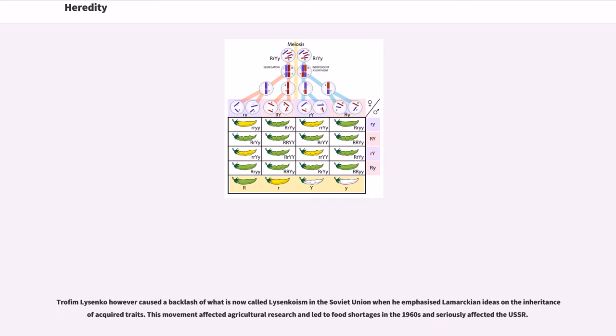Trophim Lysenko, however, caused a backlash of what is now called Lysenkoism in the Soviet Union when he emphasized Lamarckian ideas on the inheritance of acquired traits. This movement affected agricultural research and led to food shortages in the 1960s and seriously affected the USSR.